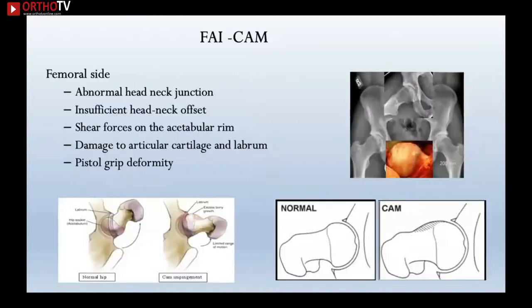Looking at cam impingement, it is on the femoral side — a head-neck junction abnormality causing reduced head-neck offset. This causes increased shear forces on the acetabular rim, damaging the labrum and articular cartilage. On x-ray, the typical description is a pistol grip deformity.